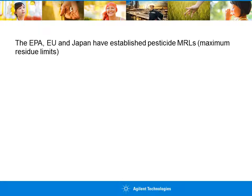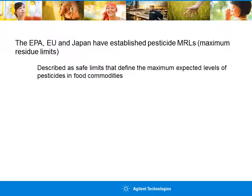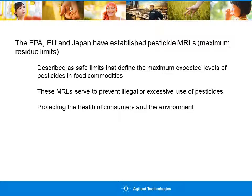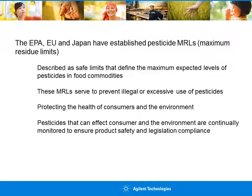The EPA, EU, and Japan have established pesticide MRLs — maximum residue limits. These limits are considered safe limits, which define the maximum expected levels of pesticides in food commodities. Having MRLs is very important because they serve to prevent illegal or excessive use of pesticides, and therefore protect the health of consumers and the environment, where pesticides can end up and concentrate in rivers, streams, and soil.